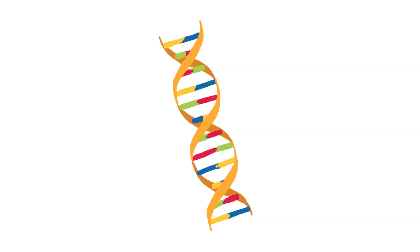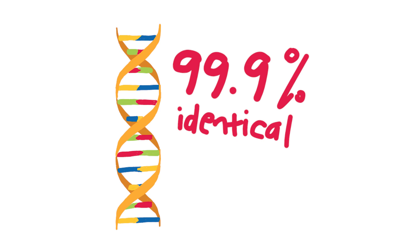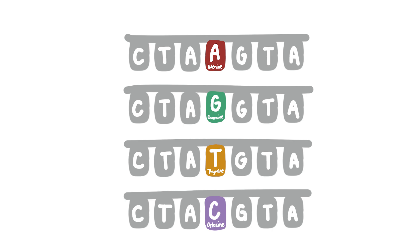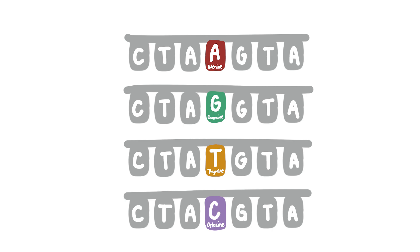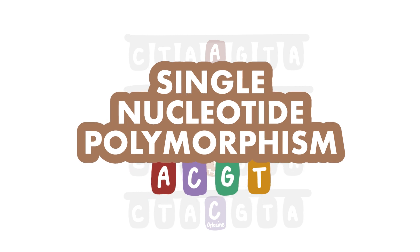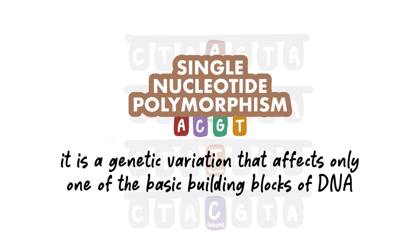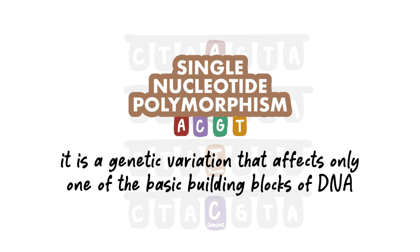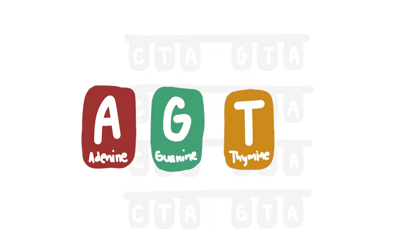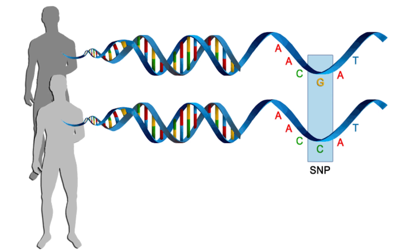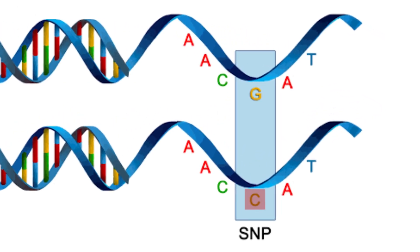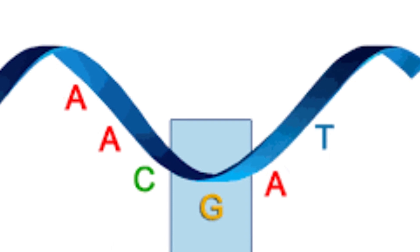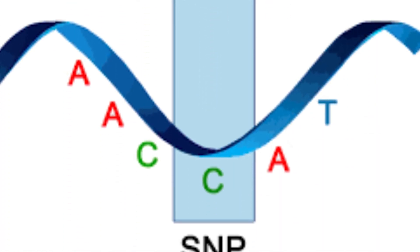Sometimes, the alterations involve a single base pair and are shared by many people. The sequence of DNA in two human genomes chosen at random is 99.9% identical. However, 0.1% of it contains variations. One type of such variation is known as a single nucleotide polymorphism, or SNP. It is a genetic variation that affects only one of the basic building blocks of DNA, such as adenine, guanine, thymine, or cytosine. For instance, the substitution of AC for AG in the nucleotide sequence AACGAT results in the sequence AACCAT.